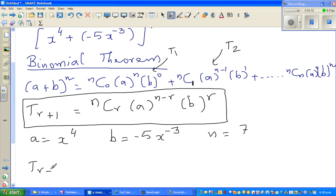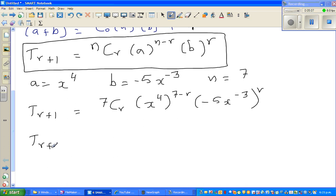7 you can compare with n. So let us write this formula. So T_r+1, we don't know r. Is n is 7. So it is 7Cr times a. What is a? x to the power 4 raised to 7 minus r times minus 5x to the power minus 3 to the power r.